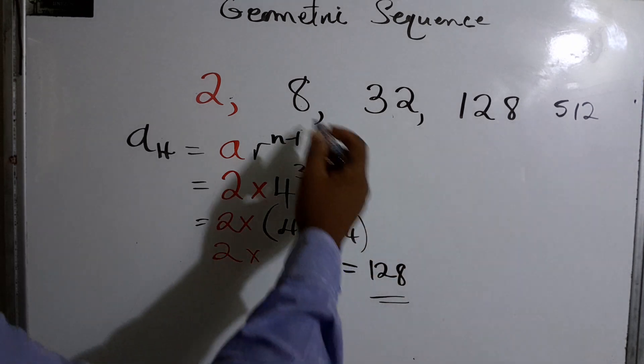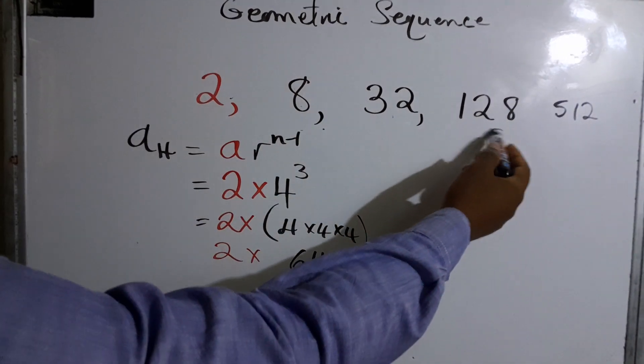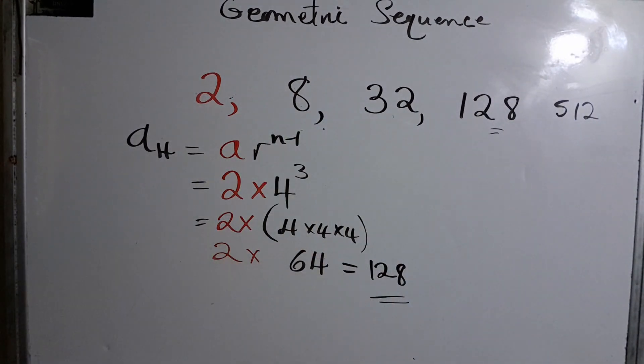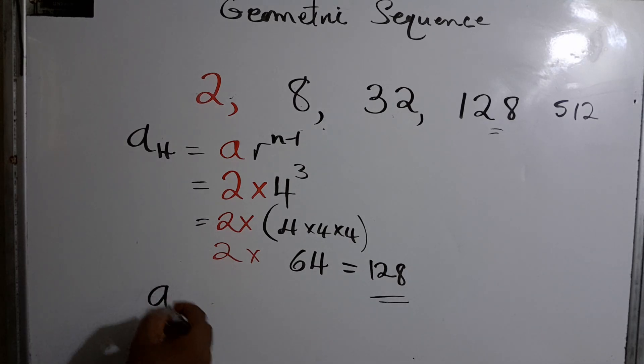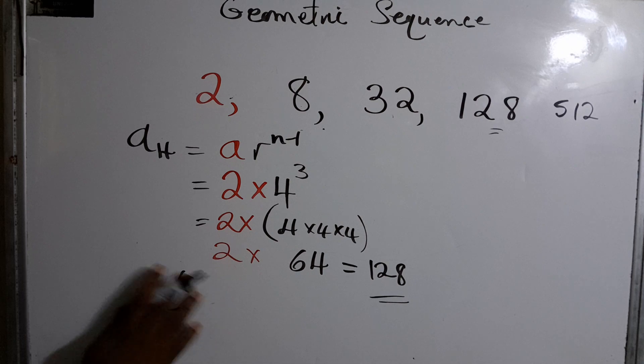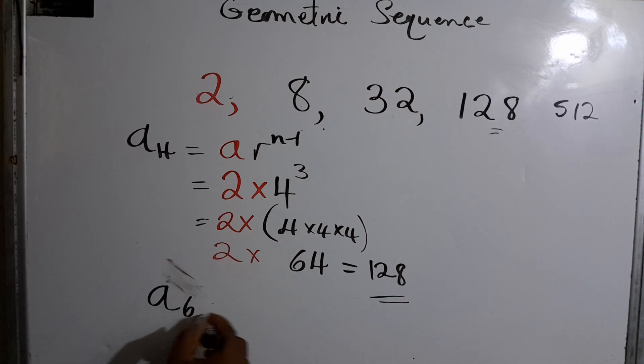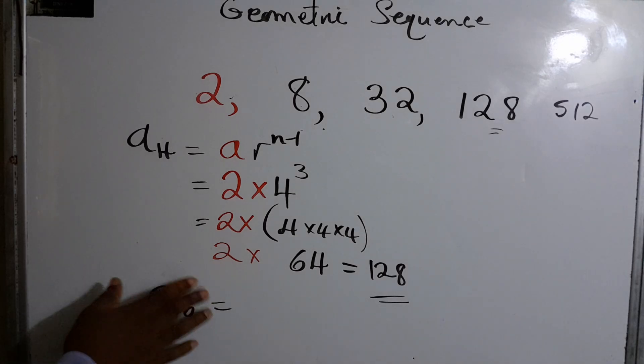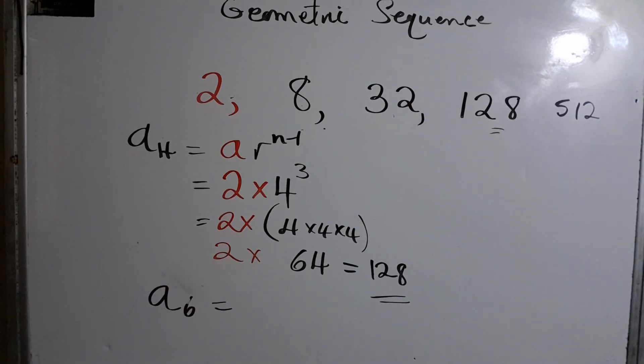Of course we know that the fourth term would have been 128, but just to practice. All right, so I want you guys to put this in the comment section. What would be a six? What would be the sixth term in that sequence? Then I'll explain it tomorrow. No doubt, I'll see you guys in another video.